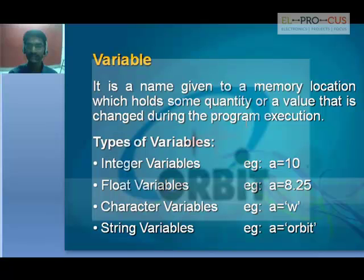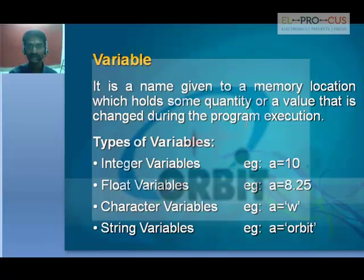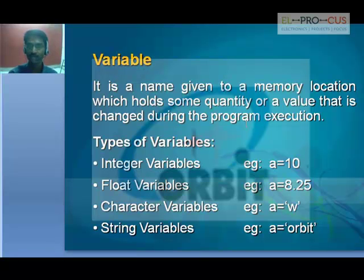A variable is a name given to a memory location which holds a certain quantity or value that changes during program execution. In mathematical terms, x is a variable — x holds a certain value at the beginning and at the end it holds some other value. So the value of x keeps on changing, which is why we call x a variable.